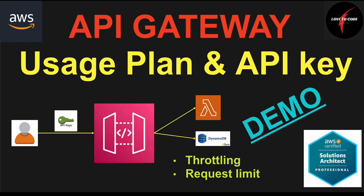Today I'm going to go through API Gateway with usage plan and API key. The usage plan helps us to throttle and limit API requests from the client, where the API key is used to secure our API Gateway endpoint in a simpler manner. Please subscribe to my channel if you like my content.